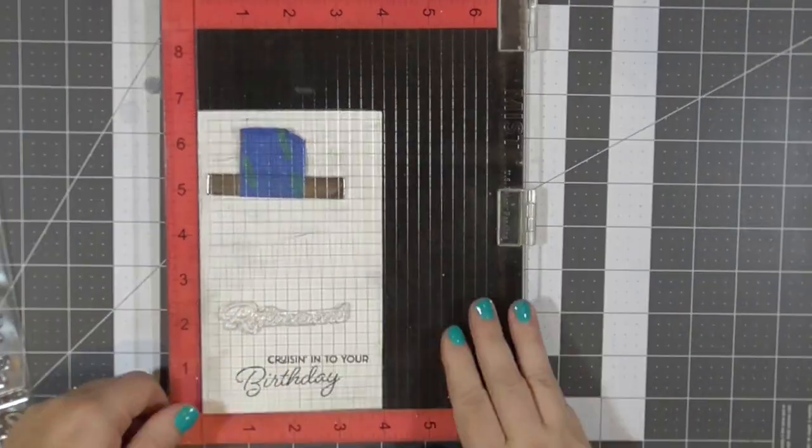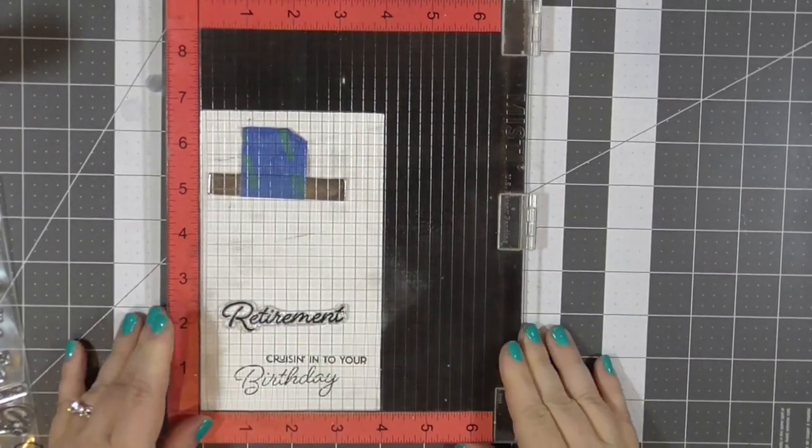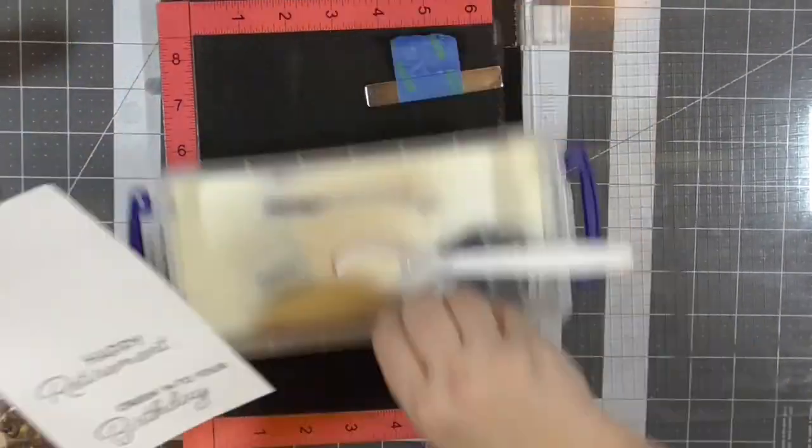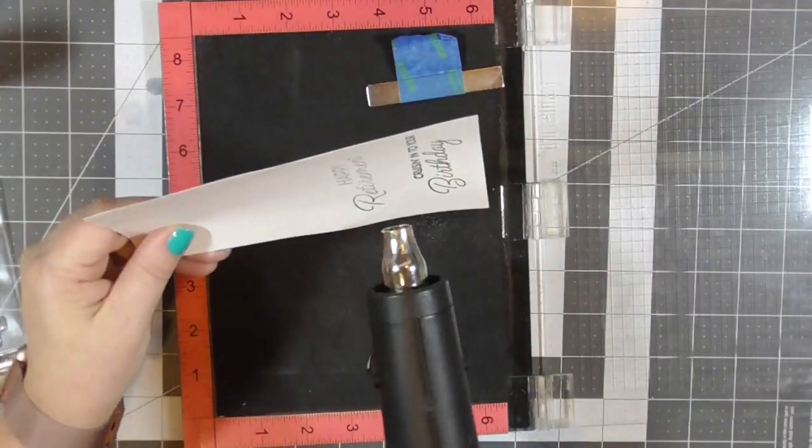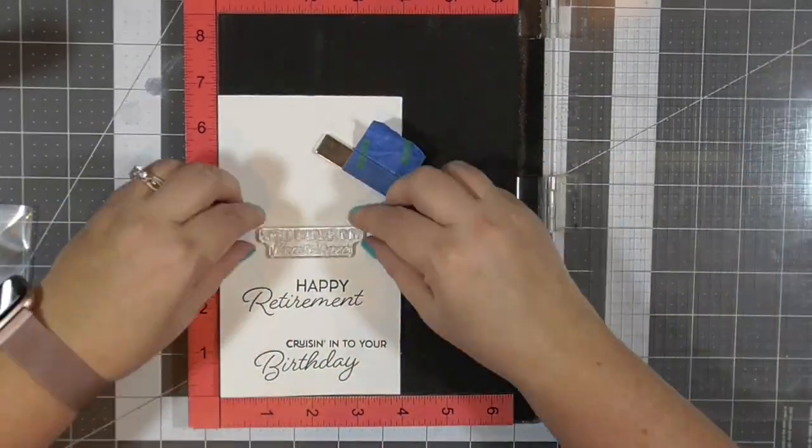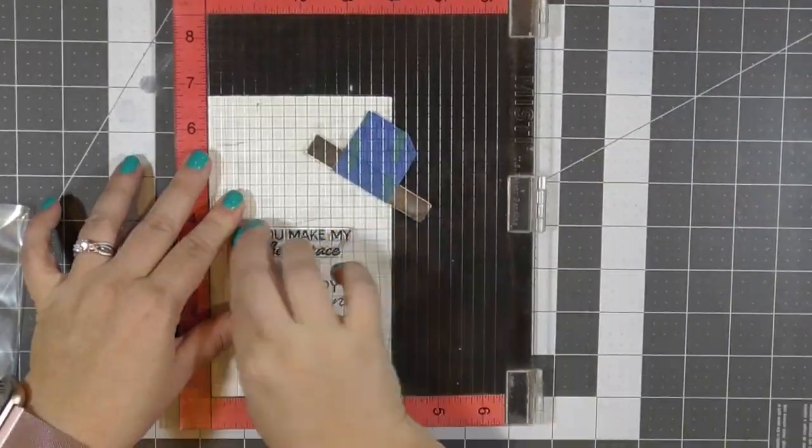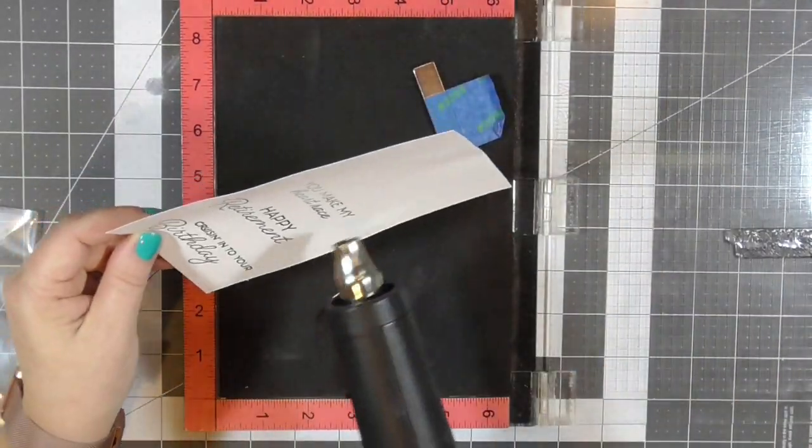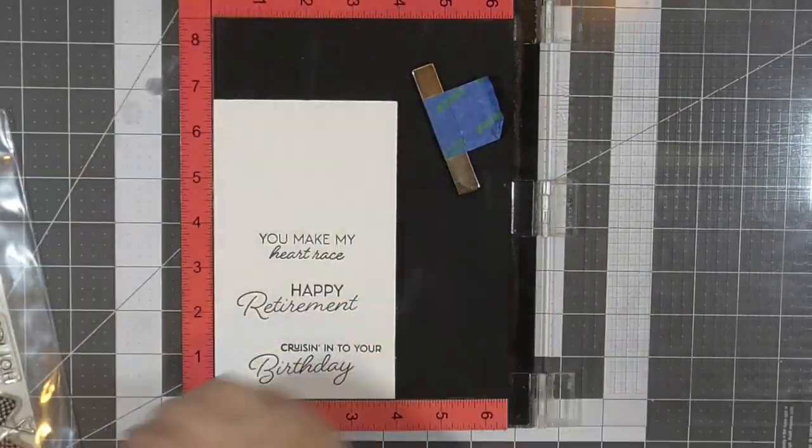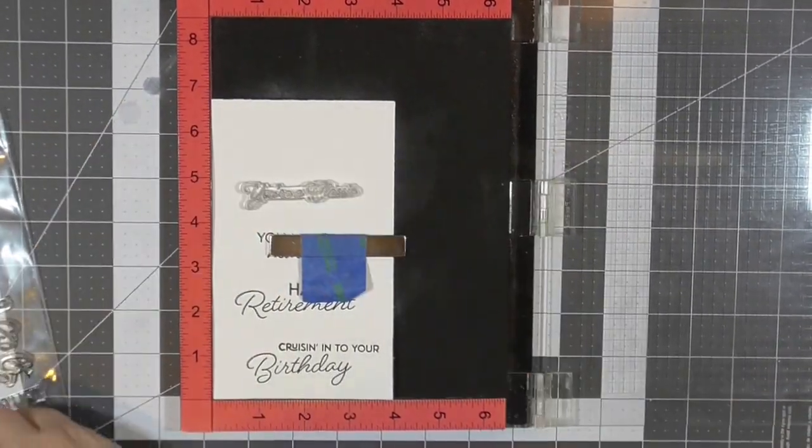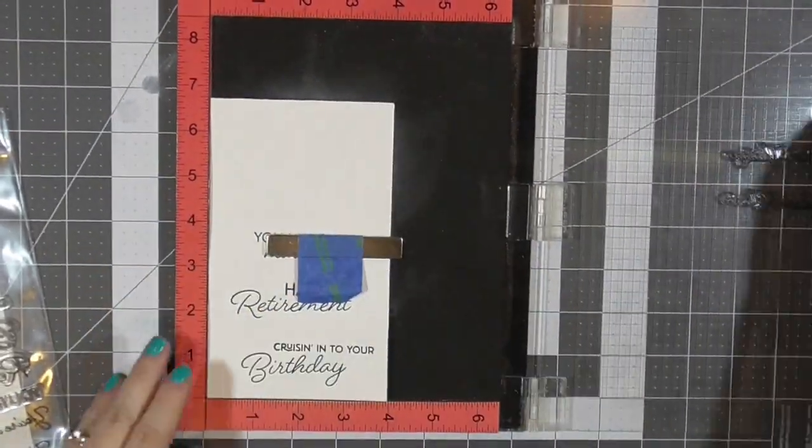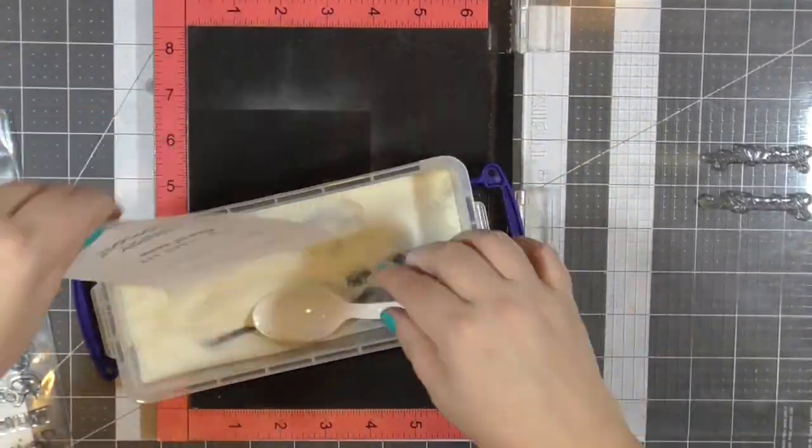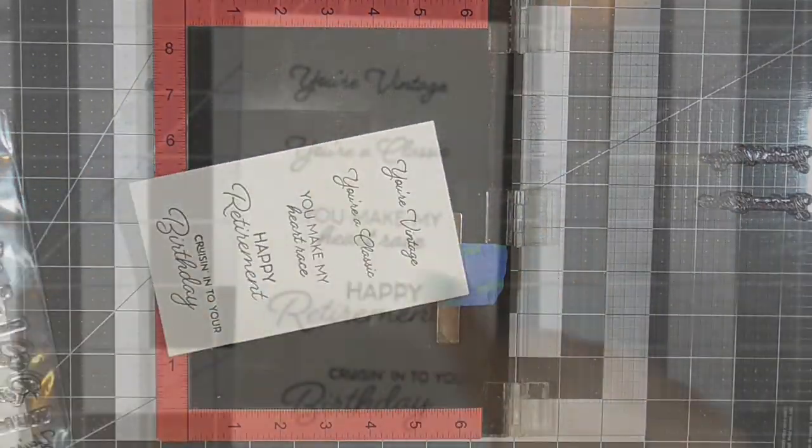I have stamped cruising into your birthday, happy retirement, and I am putting the embossing powder on and heat setting in between on my sentiments in case I bump them. That's the only reason I'm doing them one at a time. The next one I'm doing is you make my heart race. I thought that could be a fun anniversary card or just because card for my husband or anybody's significant other that likes cars. I'm also going to use the two stamp sets that say you're a classic and you're vintage. I do not have the coordinating dies for these but I'm pretty sure that Honey Bee Stamps does have coordinating dies for this sentiment set if it is still available. This stamp set might be no longer available because I'm shopping my stash.